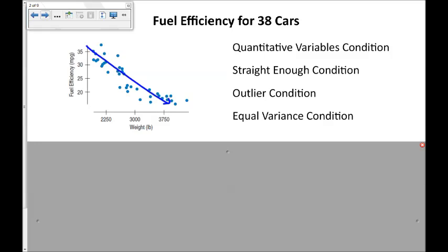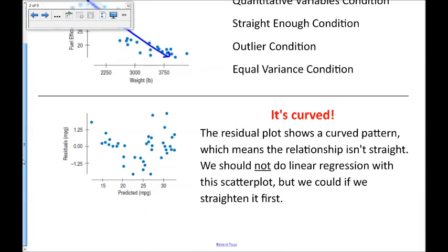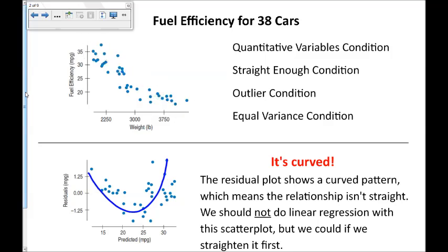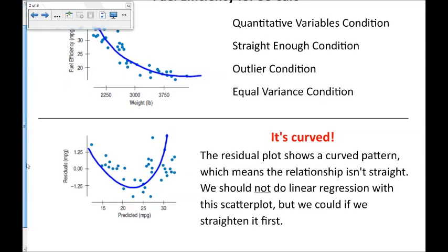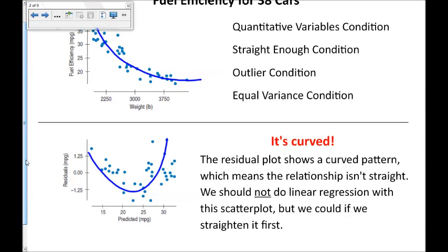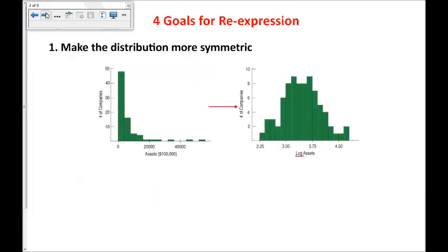But if we look at a residual plot, we notice that there is a pretty distinct curve in the residual plot, which means in the original scatter plot this actually wasn't linear. It was a curve, and we see that perhaps better from the residual plot than we did from the original scatter plot. Now, all of the tools we've built up so far with regression require that the relationship be linear. We should not do linear regression with this scatter plot because it's curved, but we could do linear regression if we straightened it first.